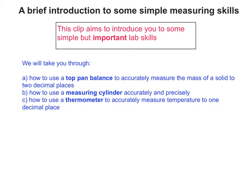The three things we'll take you through are how to use a top pan balance to accurately measure the mass of a solid to two decimal places, how to use a measuring cylinder with accuracy and precision, and how to use a thermometer to accurately measure temperature to one decimal place.